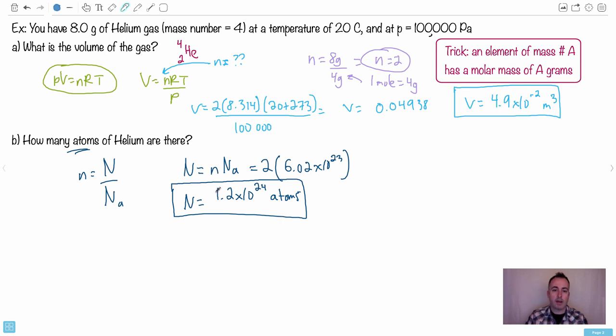But it should make sense that one mole—I mean, it's got more than one mole. So there you go, that's how you can use a kind of sneaky one, right? The sneaky part was knowing this trick here: that the mass number A has a molar mass of A grams.